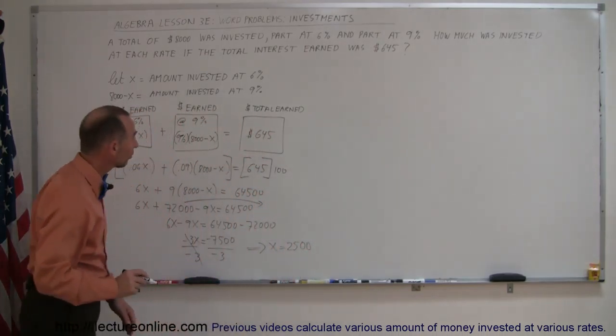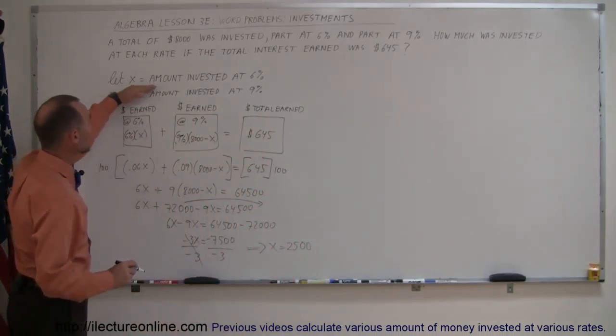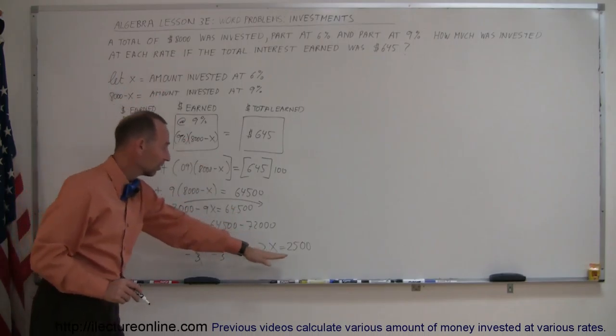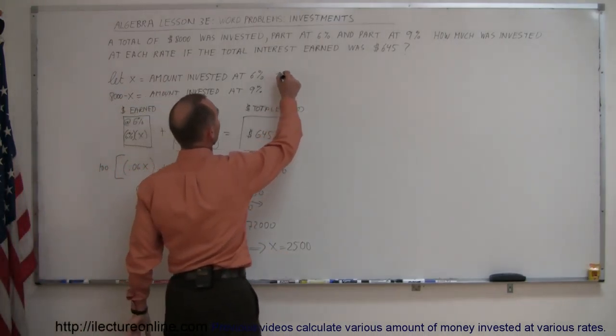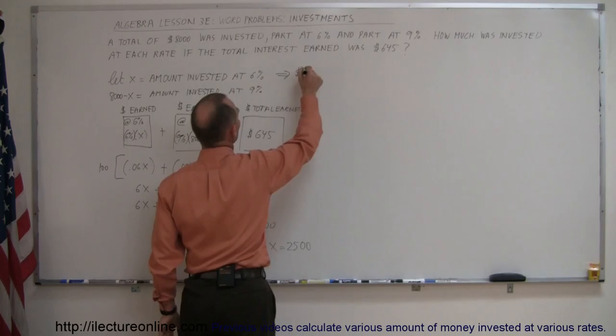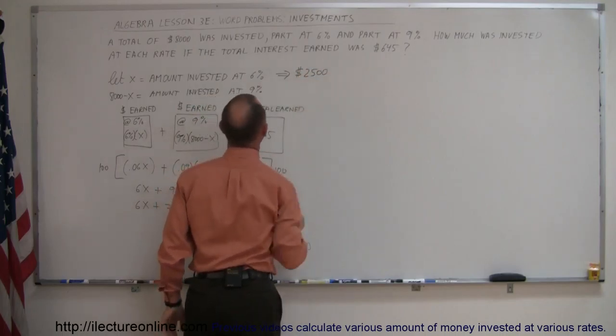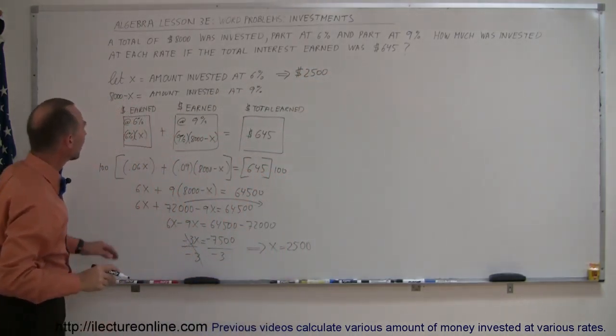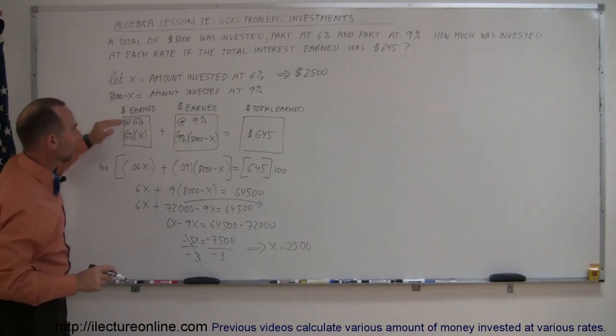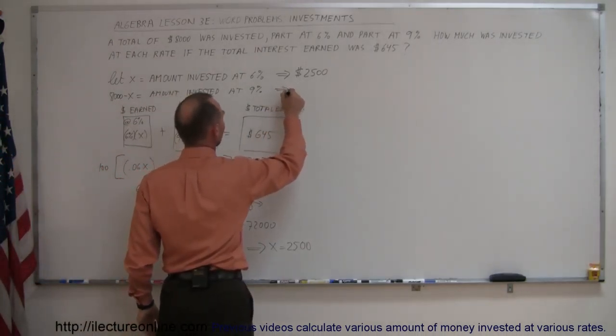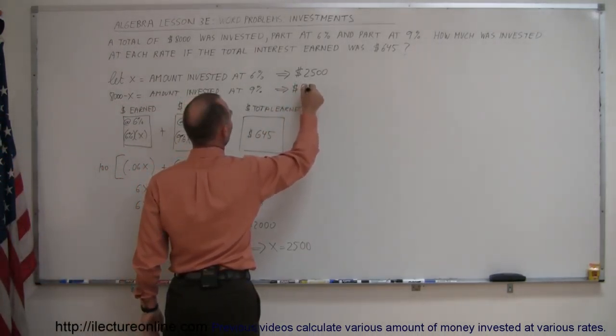Going back to our definitions, we see that X represented the amount invested at 6%. Since X is 2,500, that means we invested $2,500 at 6%. And then the remainder, 8,000 minus that, which is 5,500, is the amount invested at 9%.